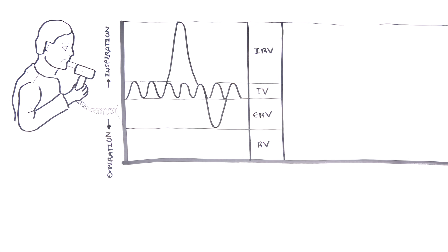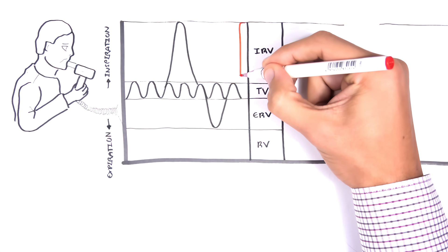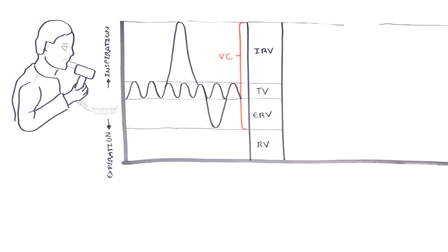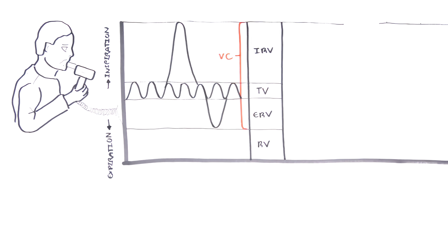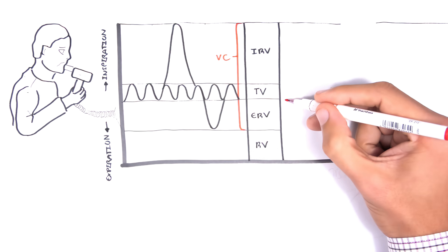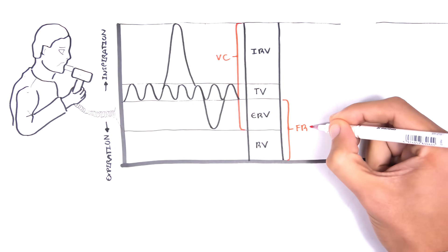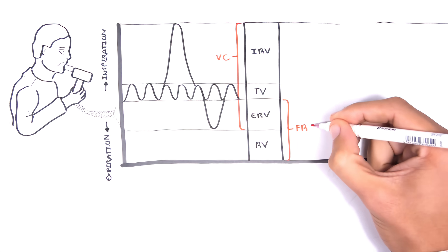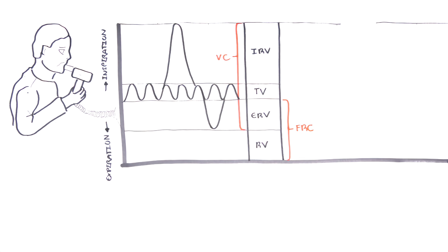Using these lung volumes you can measure the lung capacities, which help define functioning lungs. The vital lung capacity refers to the maximum amount of air expired from a fully inflated lung — it is tidal volume plus inspiratory reserve volume plus expiratory reserve volume. The functional residual capacity, which should not be mixed up with the residual volume, represents the volume of air remaining after expiration of a normal breath: residual volume plus expiratory reserve volume. The total lung capacity is the sum of all lung volumes, about six liters in a typical adult male.